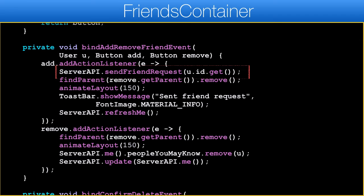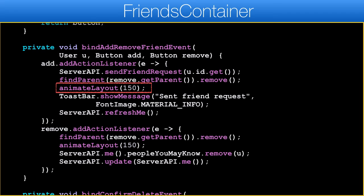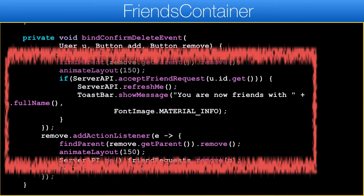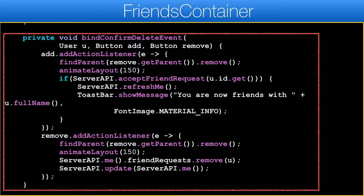Once we have this, implementing bind add remove friend event and bind confirm delete event becomes trivial. We send a friend request to the server when the button is pressed. After removing the container with the friend suggestion we animate the remaining UI into place. We refresh the me object as it might be stale after this change. We invoke the server API code to trigger the appropriate server changes, and with this we can now send and accept friend requests.